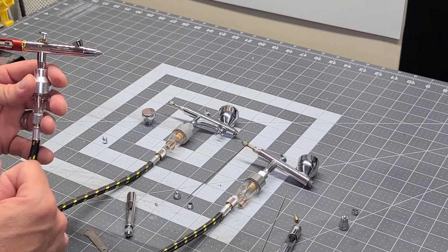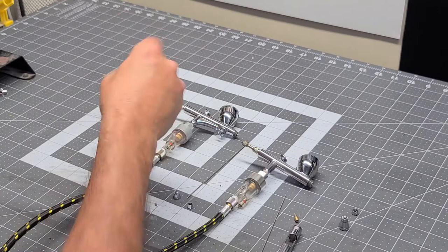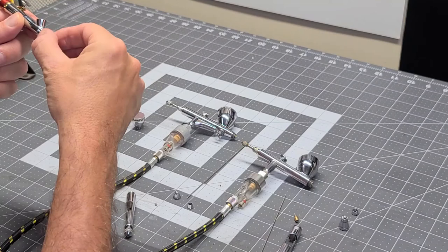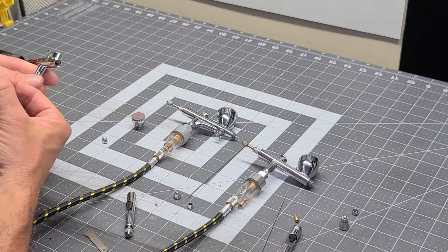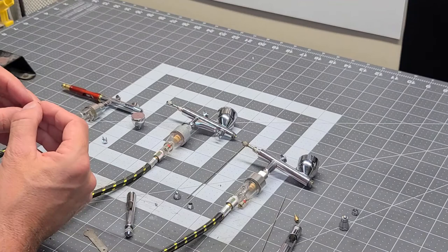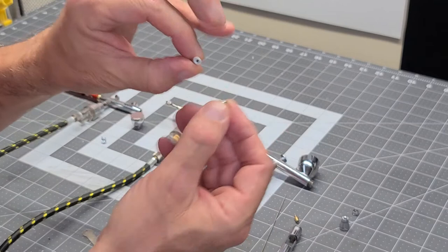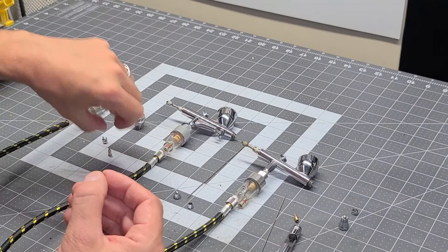The next thing would be the nozzle cap - again, is just unscrewed with the fingers. That's a really awesome feature. I love this, that I don't need to have a tool to take this airbrush apart. As you can see, the nozzle is a nice size nozzle. It has a nice size hole in it where I can feel I can clean that out really good. It's not really, really tiny. So again, I think that's a nice feature.